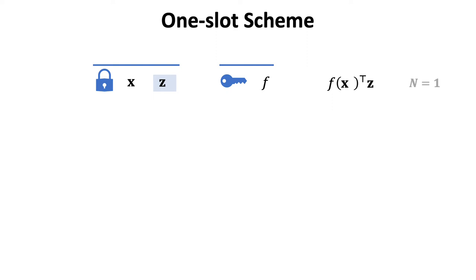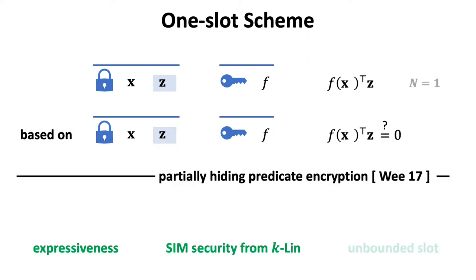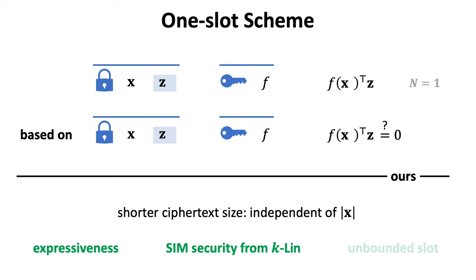Let me begin with a brief sketch of our one-slot scheme. It is based on the partial hiding predicate encryption, which basically corresponds to the same function but reveals whether the result is zero or not, rather than the actual value. We inherit the expressiveness and security guarantee from this predicate encryption. We also make an optimization so that the ciphertext size is independent of the size of public attribute X, and our bootstrapping technique described later preserves this feature.